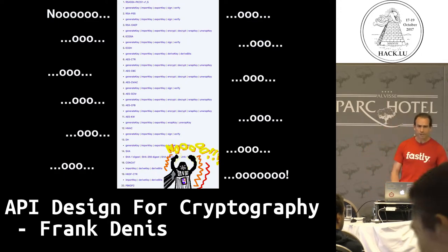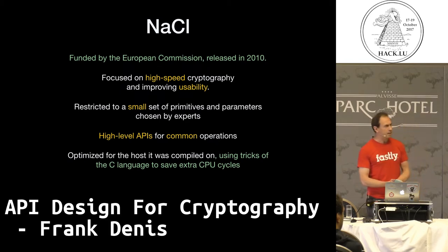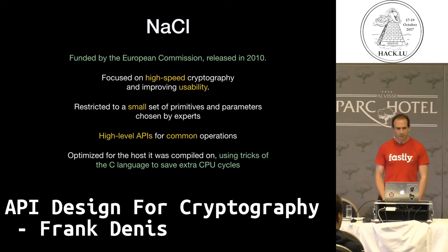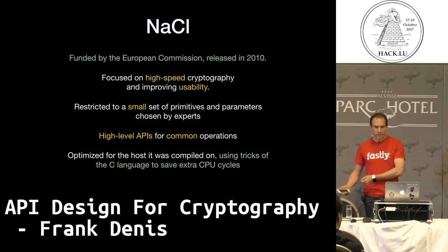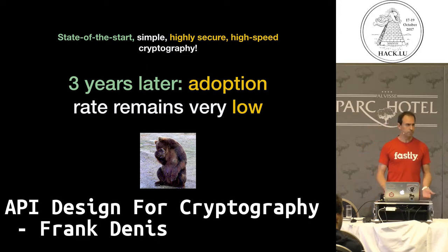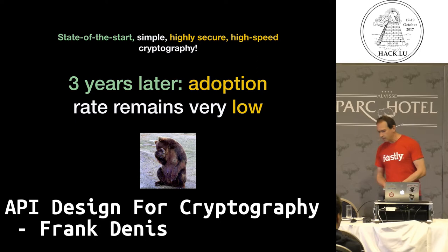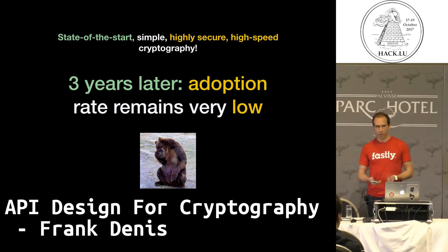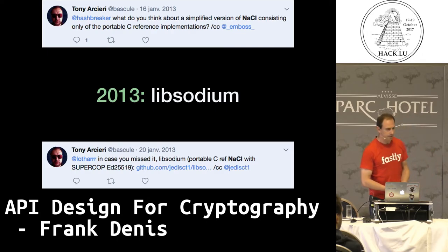Maybe if we look at something more recent they learned from history? Web Crypto API — nope, exactly like mcrypt, not any better. In 2010, there was a library called NaCl which was quite a game changer — focused on high-speed cryptography and improving usability. Its API was really simple and hard to use the wrong way, designed by experts like Daniel J. Bernstein. But a couple years later, almost nobody was using it. State-of-the-art cryptography, very easy to use, and nobody's using it.